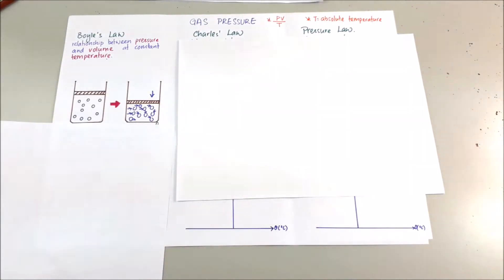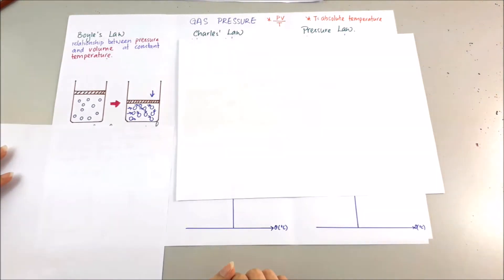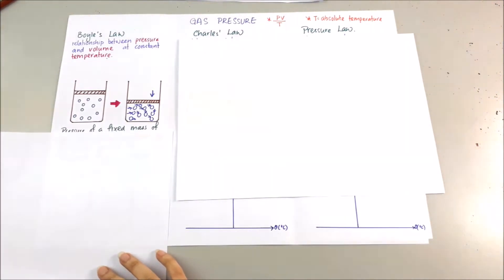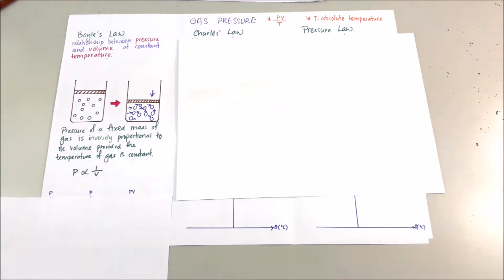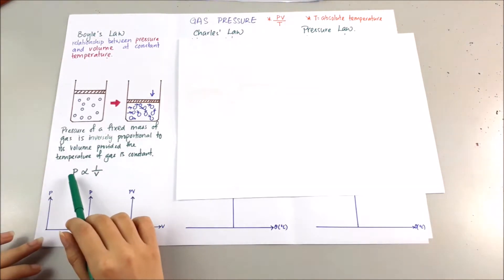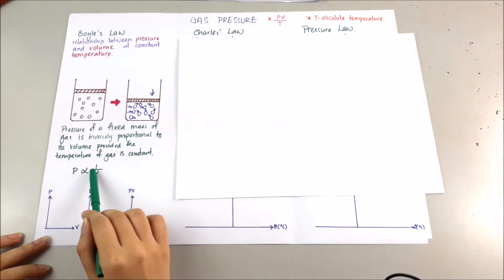Now let's start with the definition of Boyle's Law, which is: the pressure of a fixed mass of gas is inversely proportional to its volume, provided the temperature is constant. This means pressure is inversely proportional to volume.